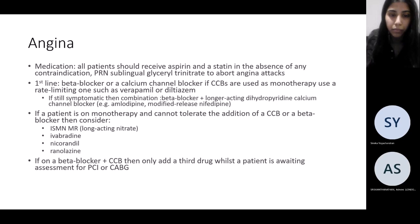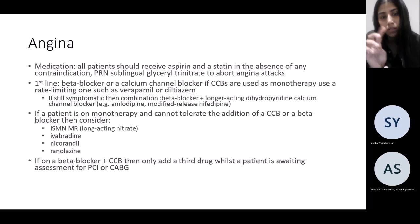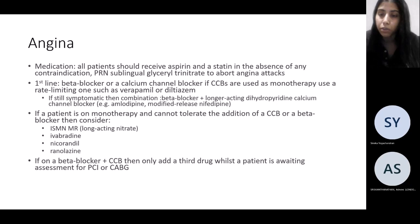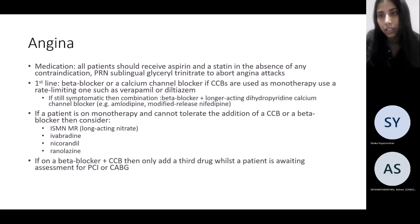If patients can't tolerate adding a CCB or beta blocker due to side effects, consider isosorbide mononitrate, ivabradine, nicorandil, or ranolazine. Your first-line treatment is always beta blocker or CCB as monotherapy, then add on. If patients are already on a beta blocker and CCB and you're considering a third agent, also assess whether they need PCI or CABG, as uncontrolled pain despite optimal therapy suggests underlying coronary artery disease that may require intervention.